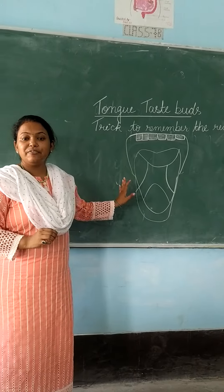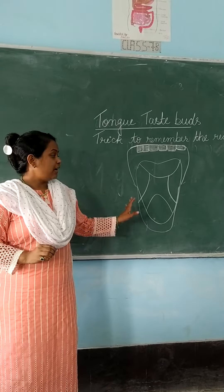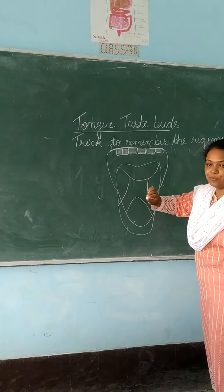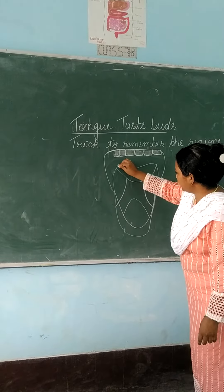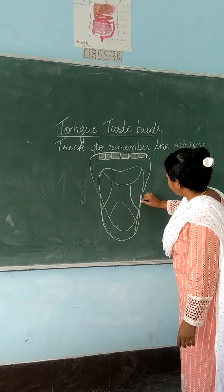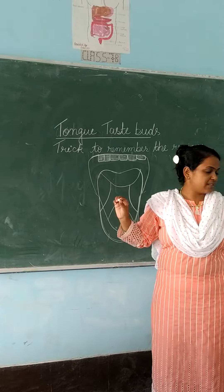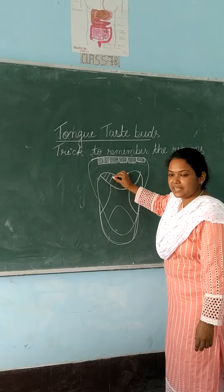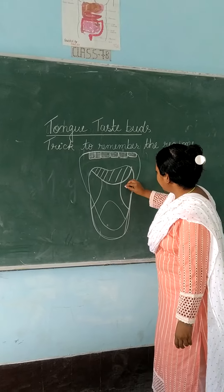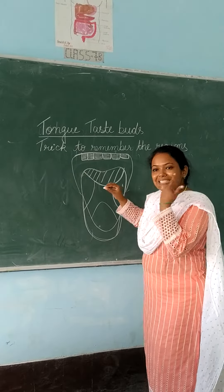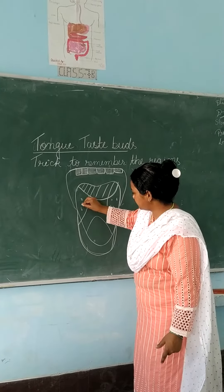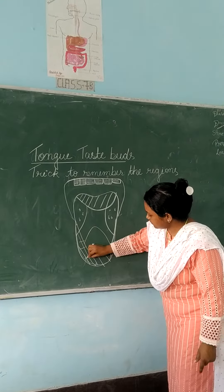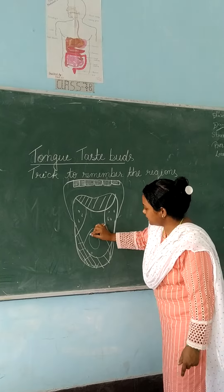Let's learn about the different regions on the tongue. Suppose this is a leaf — so first try to make the tongue like this. So this is your tongue. There are different regions on this: this is the last region, I am shading it like this. Then we have another region — the sideburns. This is the front region, and this one is the middle region.